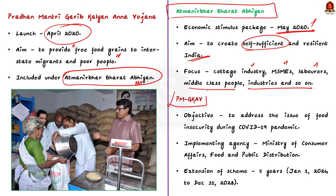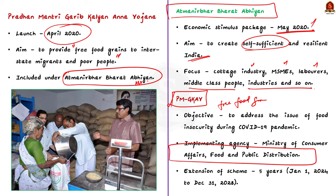Coming back to the discussion on PMGKAY — to address the food insecurity associated with the COVID-19 pandemic, the central government introduced it in April 2020 and it was later included in the ABA. The scheme aims to provide free food grains to interstate migrants and poor people. It is implemented by the Ministry of Consumer Affairs, Food and Public Distribution. Since its launch, PMGKAY was extended multiple times. Recently, the central government extended the scheme for another 5 years, that is from January 2024 to December 31, 2028.